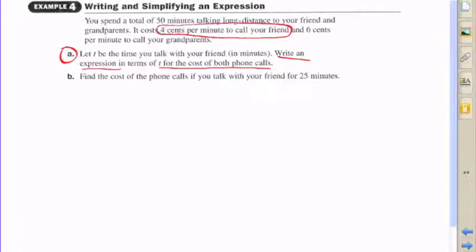So t is going to be the amount of minutes, again that's the amount of time that you talk to your friend. They want you to write an expression that has t in it and it represents the cost of both phone calls.